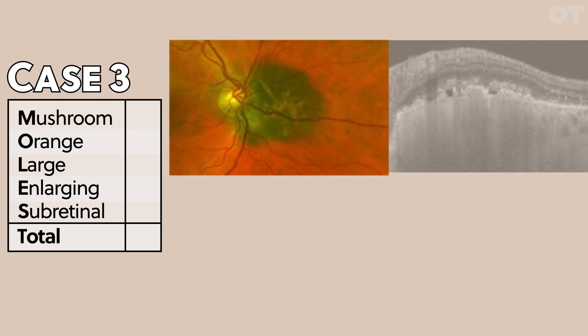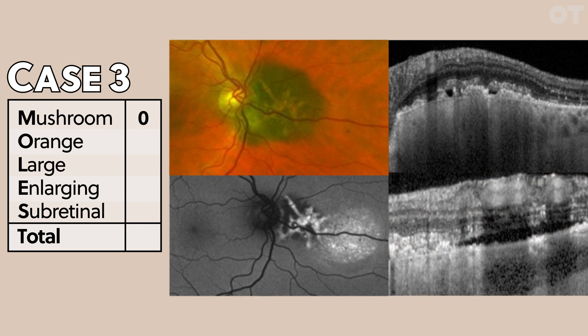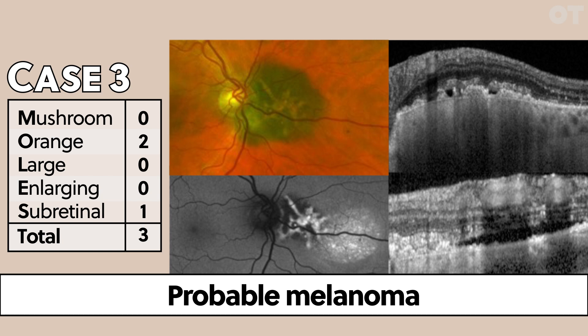This third case: on the OCT there isn't much thickness and it's definitely dome shaped, not mushroom shaped — zero for M. There's a lot of orange pigment: you can see it on the colour photograph and it's shining very brightly on autofluorescence, with clumping visible on OCT — so it scores two for O. It's not large in size and not greater than three disc diameters — zero for L. No evidence of enlargement. There is some subretinal fluid visible on OCT, scoring one for S. This gives a MOLD score of three — a probable melanoma.